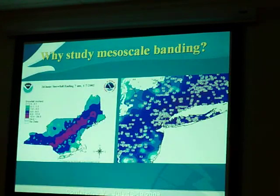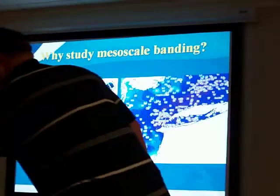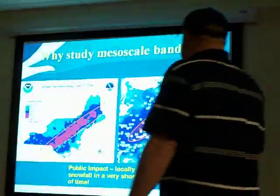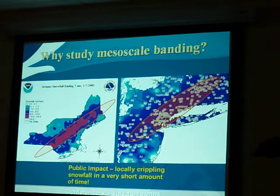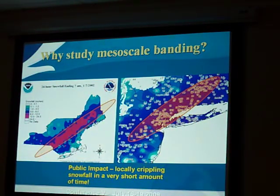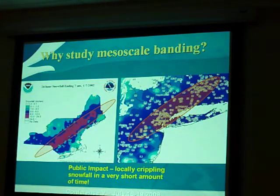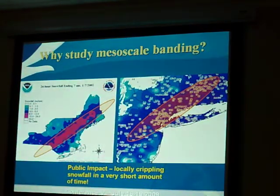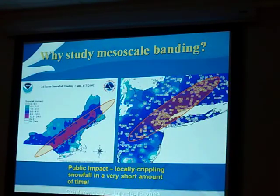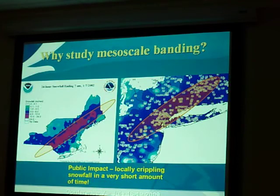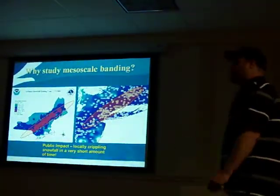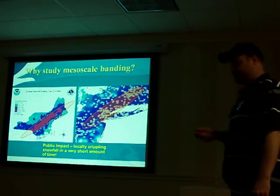You really want to try to forecast that because of public impact. You can have locally crippling snowfall in a very short period of time — and this is what we're trying to get at. It's really hard to forecast sometimes. You can look at the models and try to pick out if there's going to be band formation at all, but where it's going to be — that's the big question. We still really don't know, because a lot of times the models are wrong since it's such a mesoscale feature.